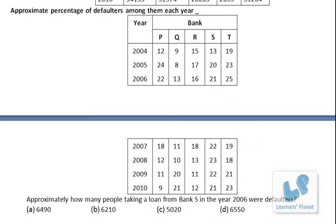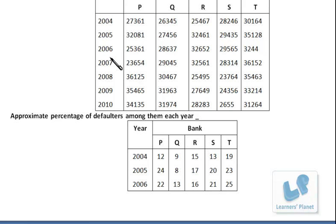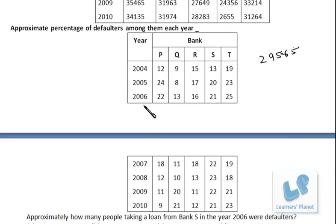Now the first question is approximately how many people taking a loan from Bank S in the year 2006 were defaulters. So we have to find out the data of 2006 of Bank S. So Bank S in 2006, the total number of people are 29,565. And the number of defaulters in 2006 were 21 percent. So we have to find out the 21 percent of this, just have to simply multiply it and get the answer.